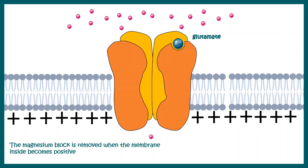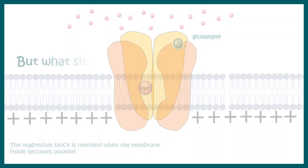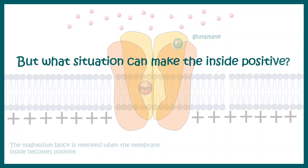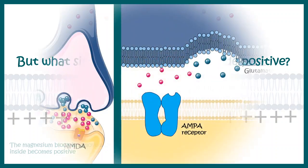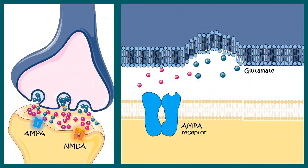Now let us ask who is responsible for the removal of this magnesium block and how the membrane becomes more positive such that the magnesium block is removed. Let us zoom into the synapse and try to understand the functioning of the NMDA receptor.